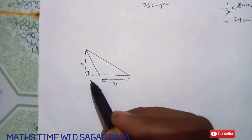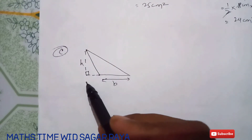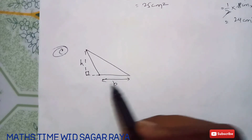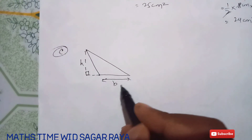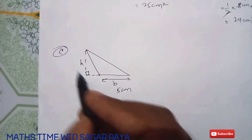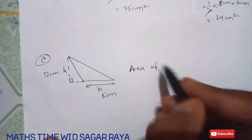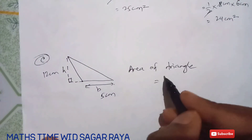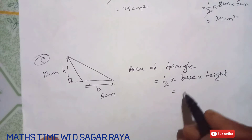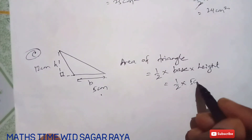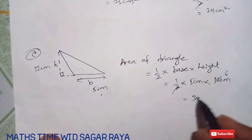In this next example, the height is given outside the triangle. This one is the base, and when we draw a straight line towards the base it becomes the height. The base is 5 cm and the height is 12 cm. Area = half into 5 into 12 = 30 cm square.